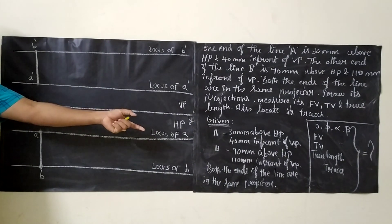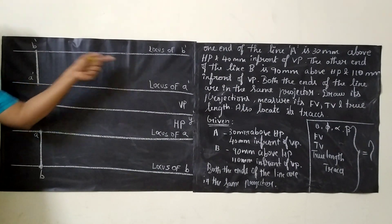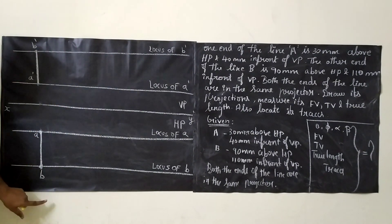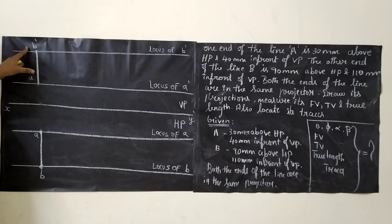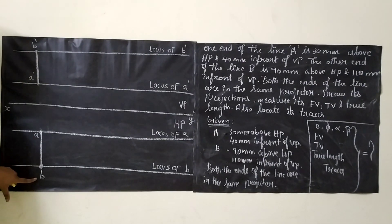You can use the values and mark the locus, then place the point B' and B. A' B' will be your front view and AB will be your top view.